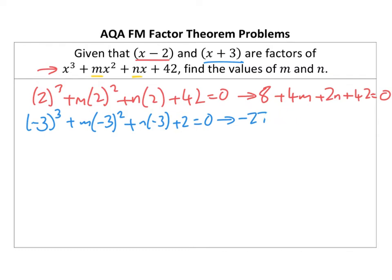Sorry, I apologize. I was looking at the wrong one. I just need to rub that out. See, I make mistakes as well. Negative 27, and then we get minus 3 squared, which is 9, plus 9M minus 3N. That's the bit I thought I was doing, but that should be 42, shouldn't it? Plus 42 equals 0.